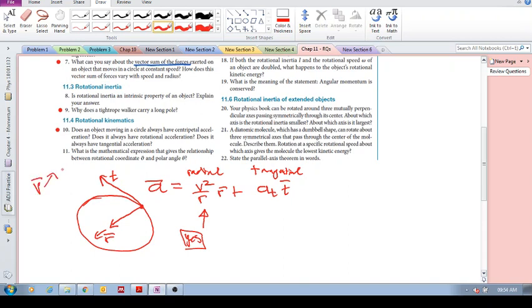your velocity vector has two components. Its magnitude and its direction. If it's direct, even if its magnitude is constant, as long as the direction is changing, we have an acceleration.